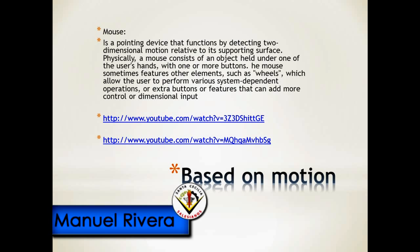A mouse is a pointing device that functions by detecting two-dimensional motion relative to its supporting surface. Physically, a mouse consists of an object held under one of the user's hands with one or more buttons. The mouse sometimes features other elements such as wheels, which allow the user to perform various system-dependent operations, or extra buttons that can add more control or dimensional input.